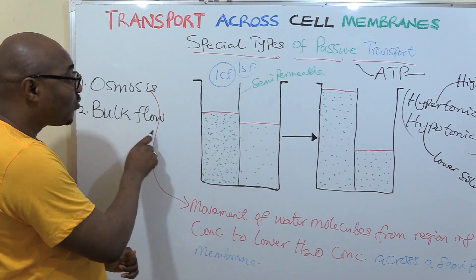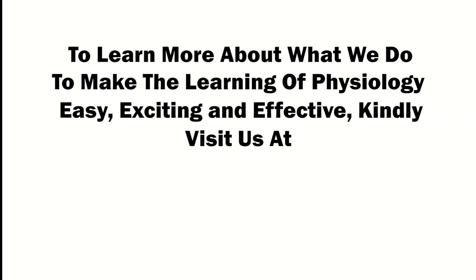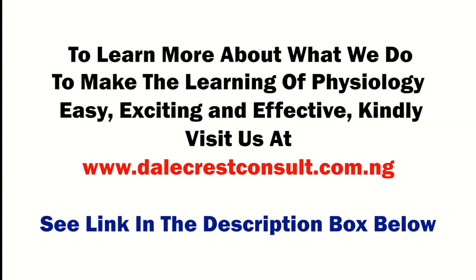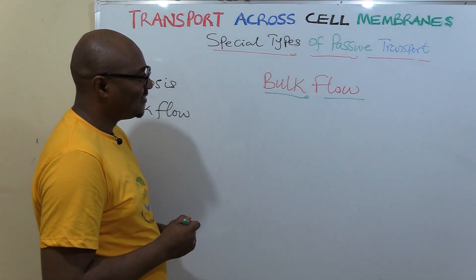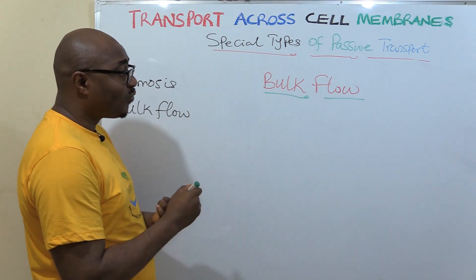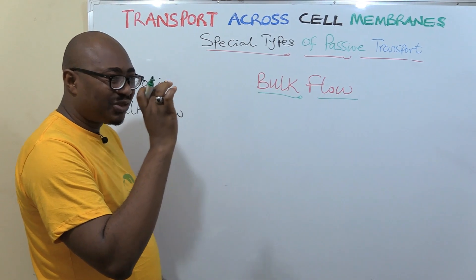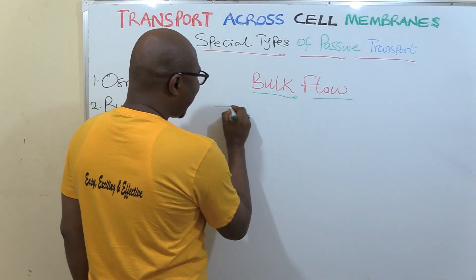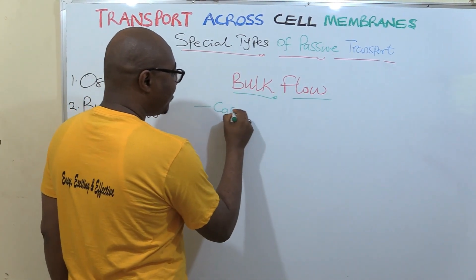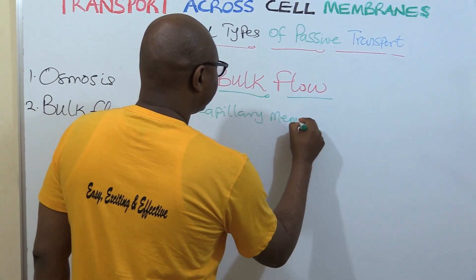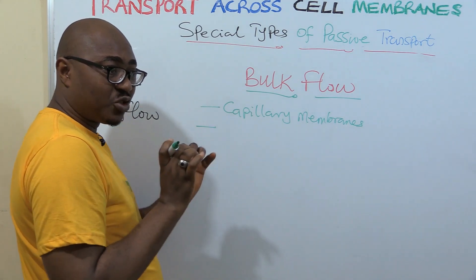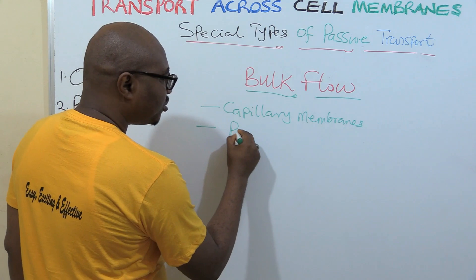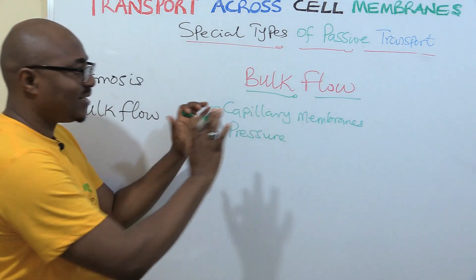So, we're going to be looking at bulk flow after this break. Welcome back. Now, the second one, special types of passive transport: Bulk flow. You might not have heard of this before. But this bulk flow, the major thing you must remember are two key concepts. One is that bulk flow happens across capillary membranes. And what is moving the substances that need to be transported? It's pressure.